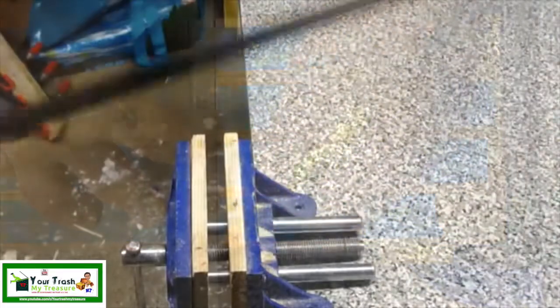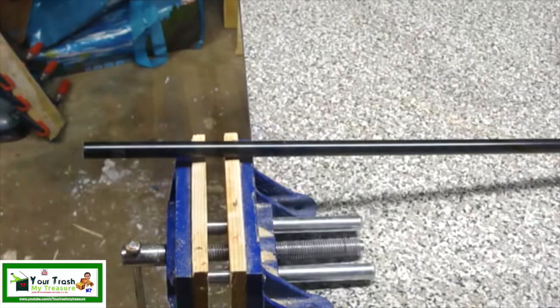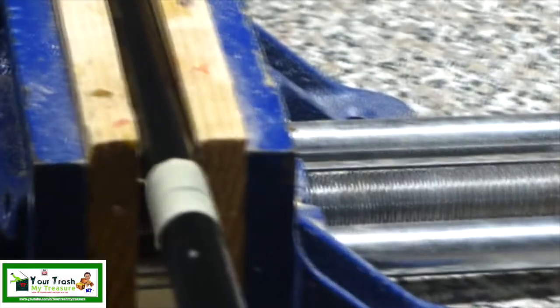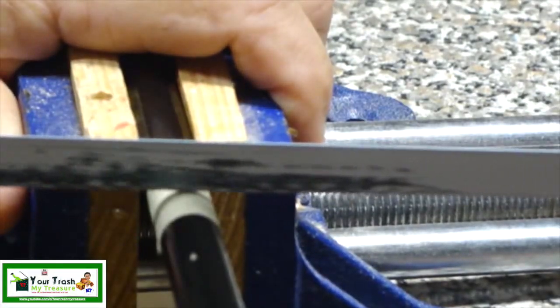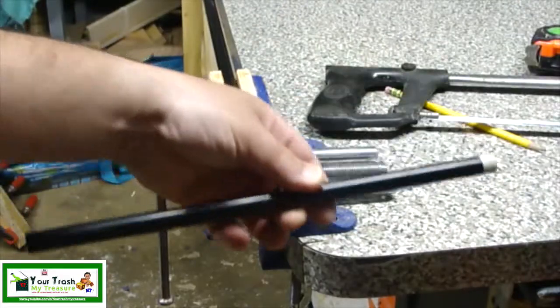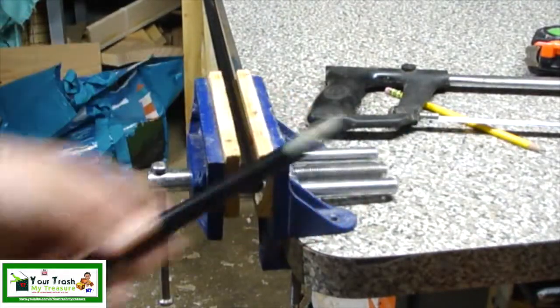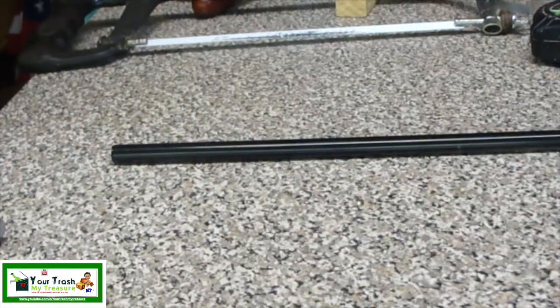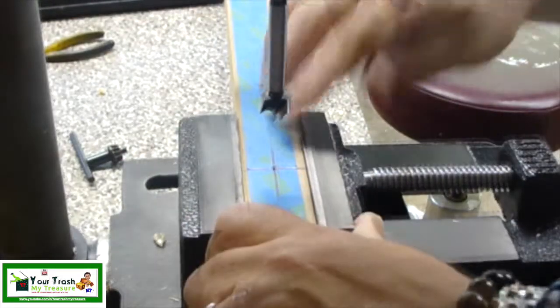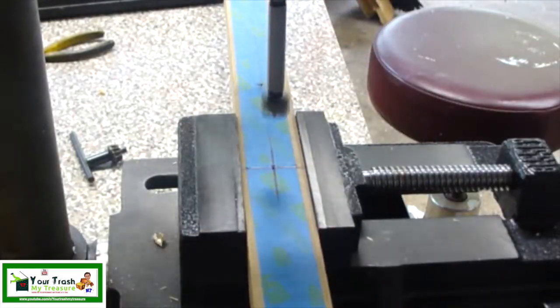Using these tin rods I made six shelf supports. I cut them at 12 inches each. Then with a Forstner bit, I drilled holes at the areas I marked to accept the shelf supports.